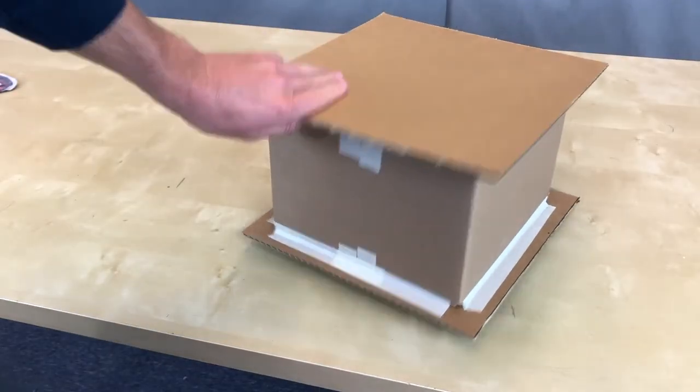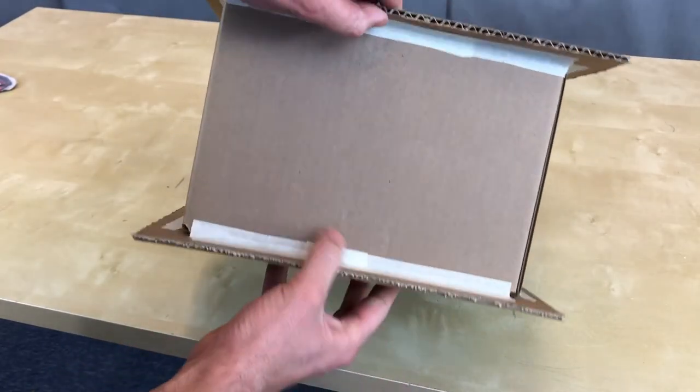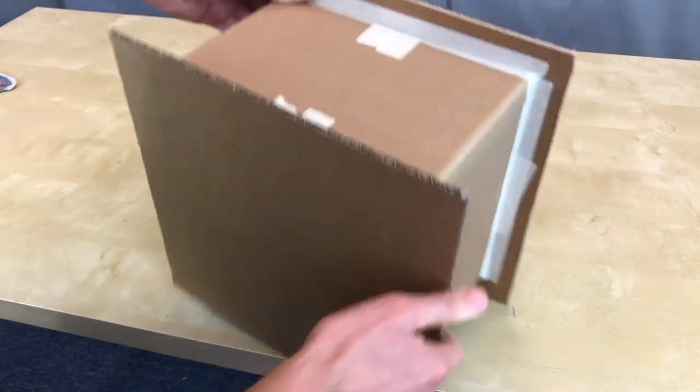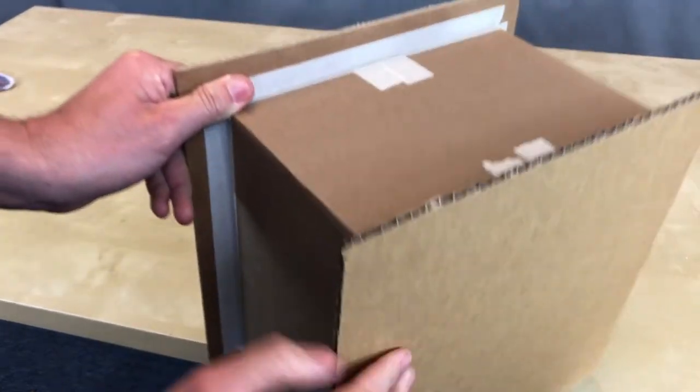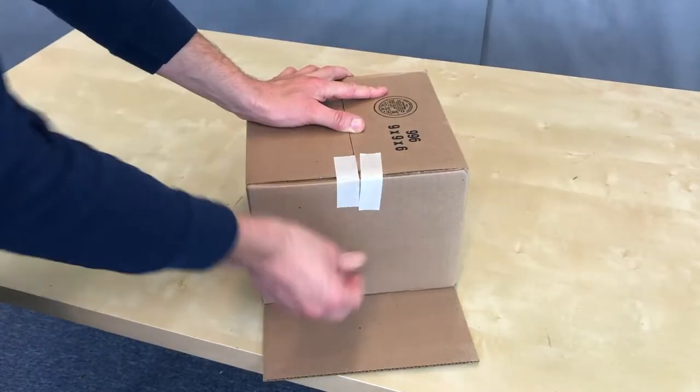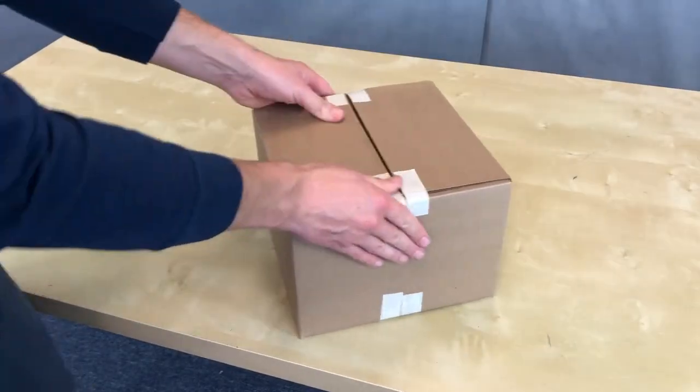The first thing we need to do is make our labyrinth base. That means closing up a box and putting two pieces of cardboard on either side of the box. These pieces of cardboard will act as edges of the labyrinth. So start construction by sealing up your box with tape.